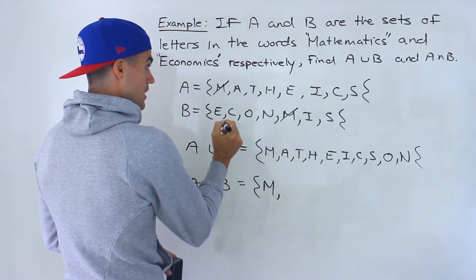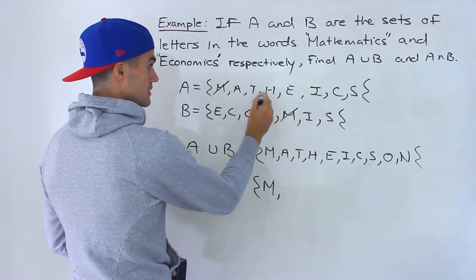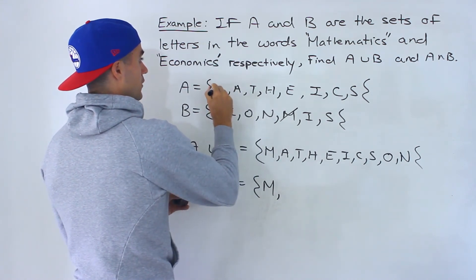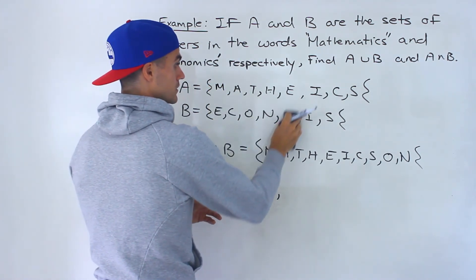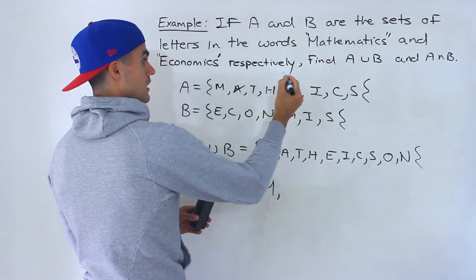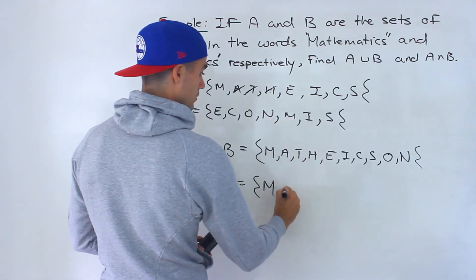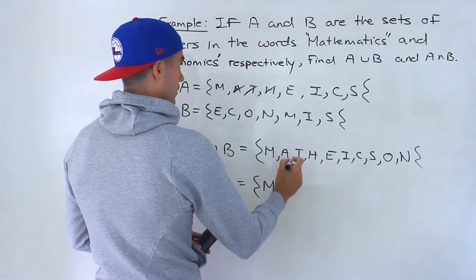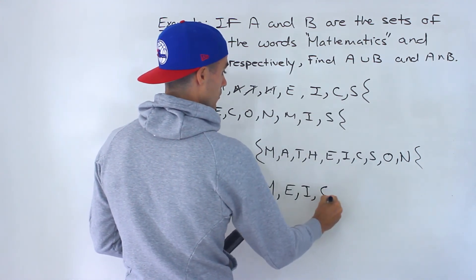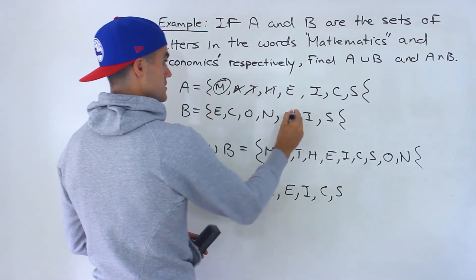The A is not, the T is not, the H, actually you know what maybe we should, it's probably better to cross out the ones that aren't in both right. So A is not in both, T is not in both, H is not in both, E is in both, I is in both, C is in both, and then S is in both so let's circle these.